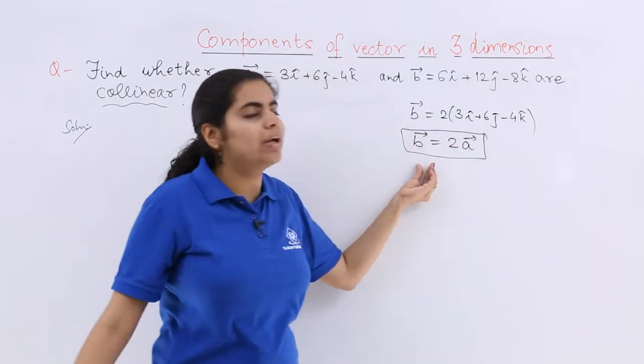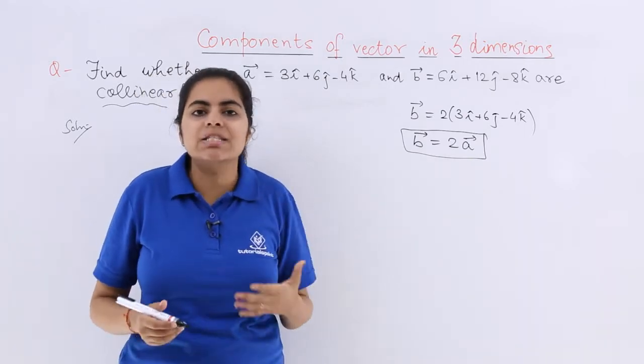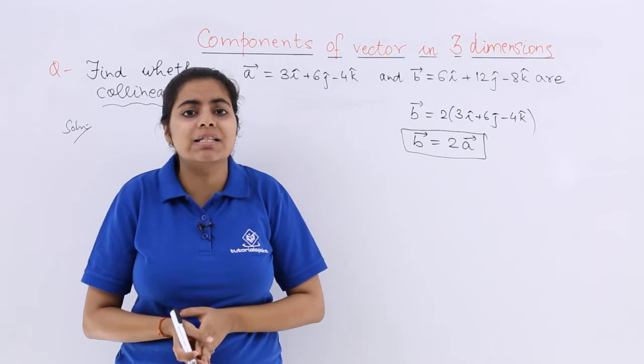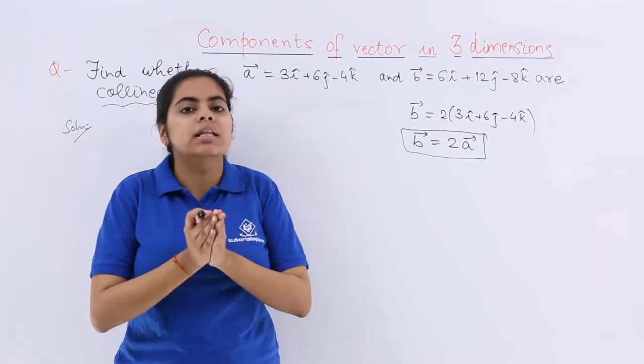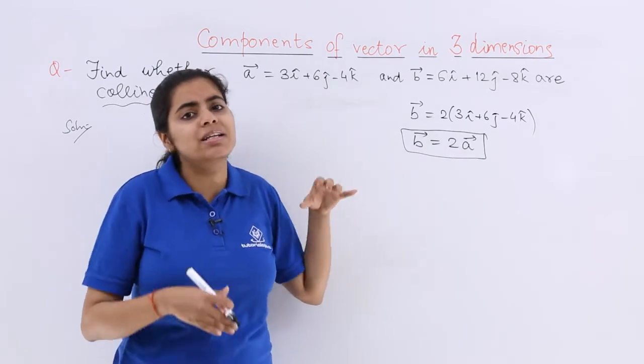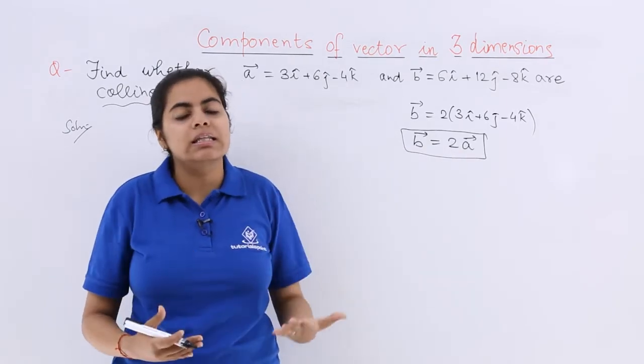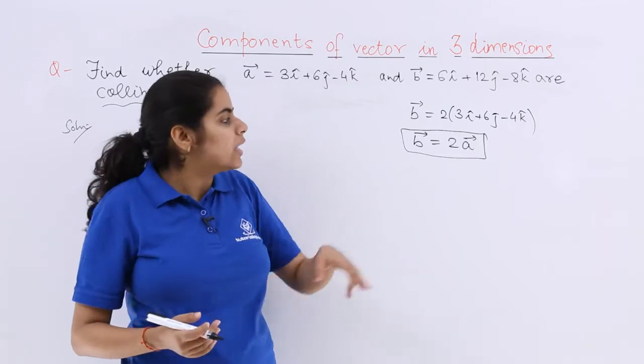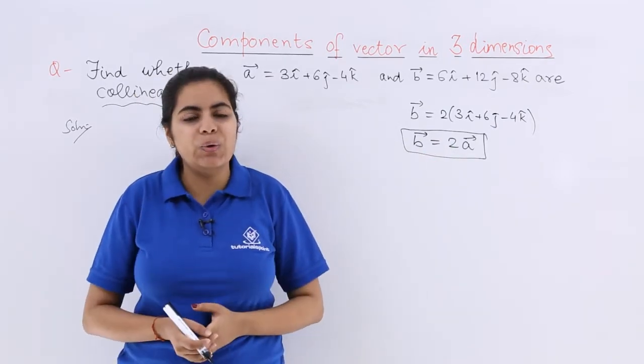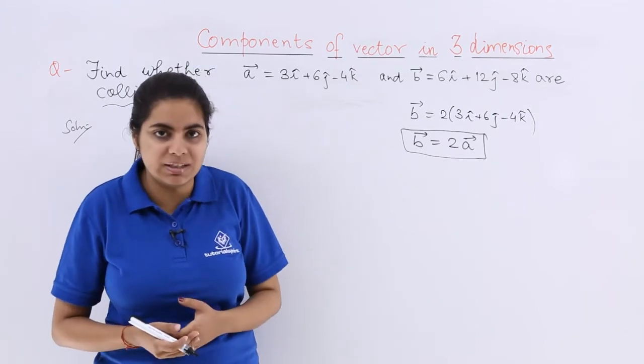So if one of the vectors can be expressed as a multiple or something about the second vector, we say that the given vectors are collinear. Because these vectors in short mean what? b⃗ vector is twice in magnitude as that of the a⃗ vector, and since there is only a plus sign, the direction is same. So these are collinear and that is how you check the collinearity.